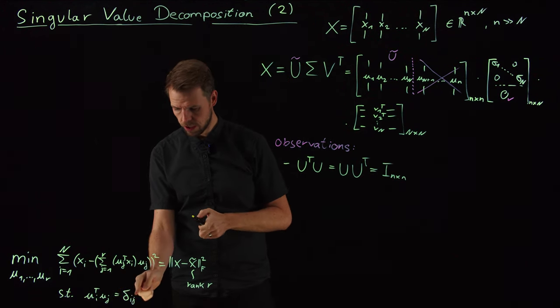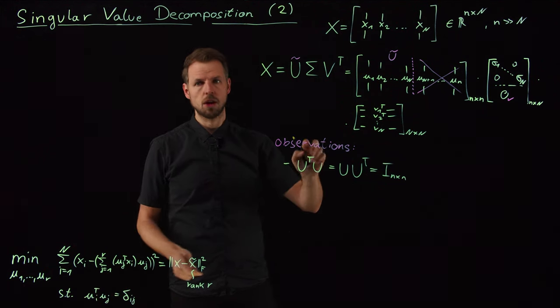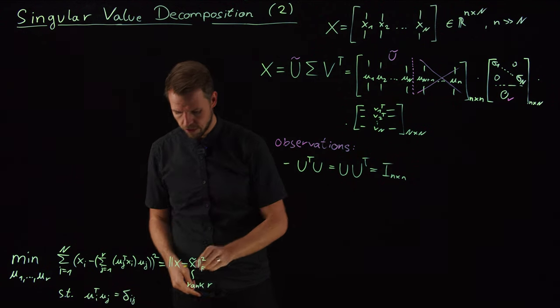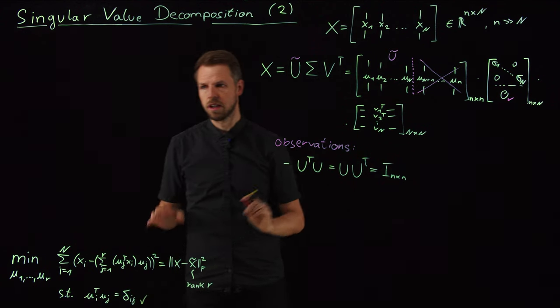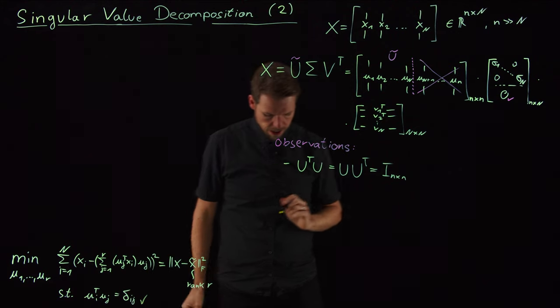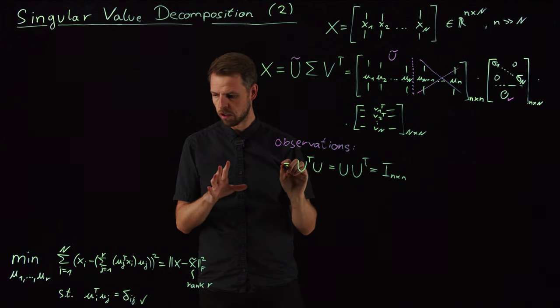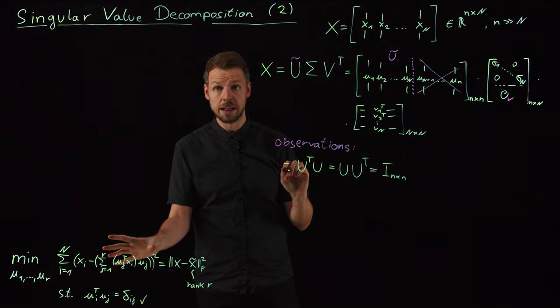And so this is precisely this condition here. This is, if you wish, the identity matrix for big U times big U. So you see observation one, check, we have found a satisfactory result in terms of our constraint. And now come two observations that are relevant for the optimality.